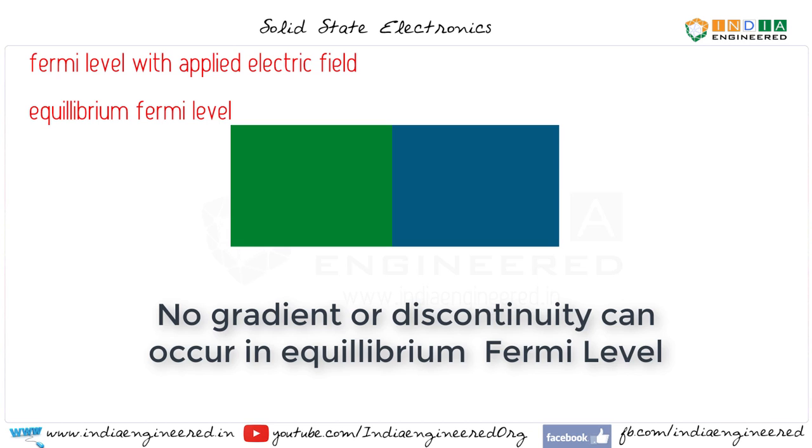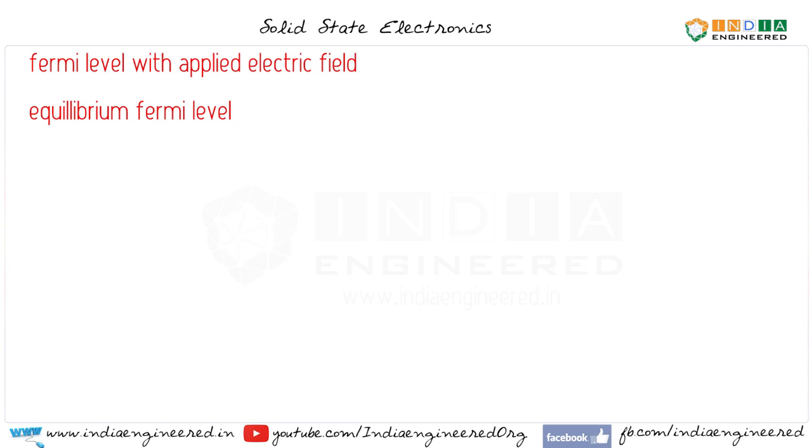What does that imply? It implies that at equilibrium and when there is no current flow from material 1 to material 2, there cannot be any gradient in equilibrium Fermi level. Now let's discuss it in detail.